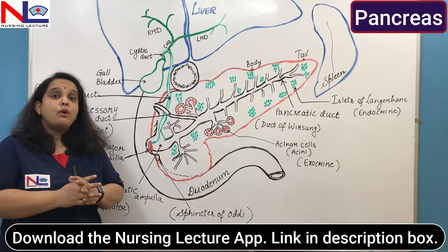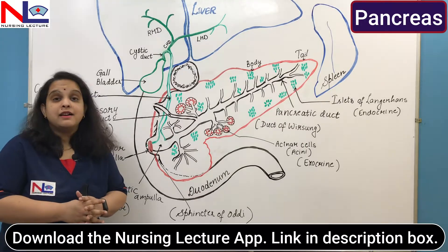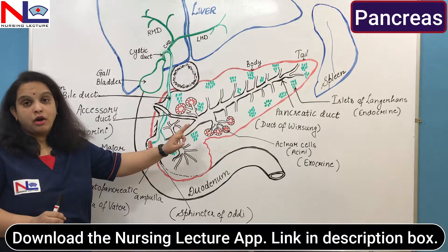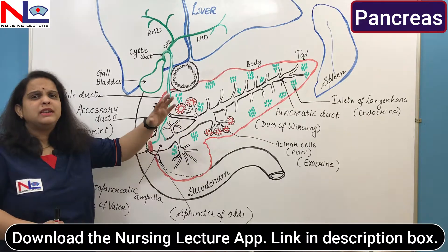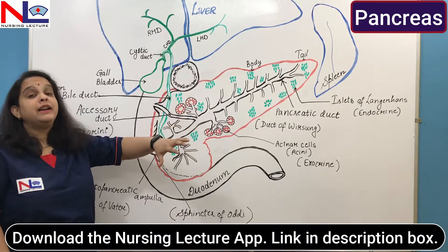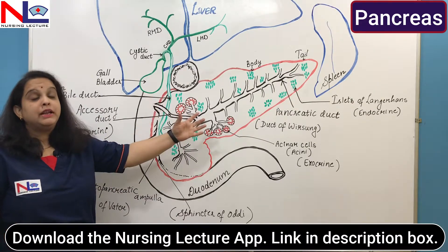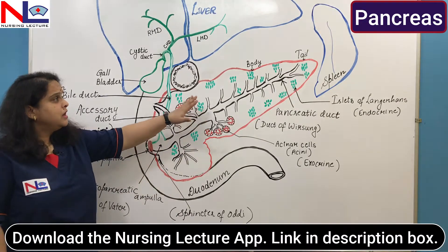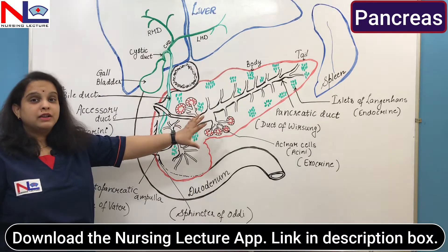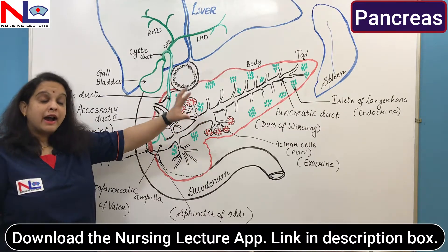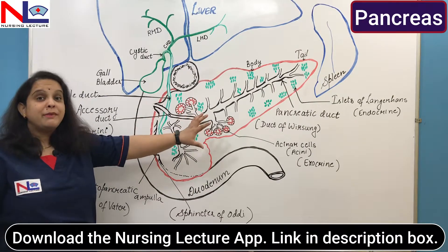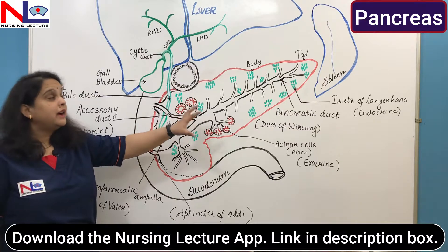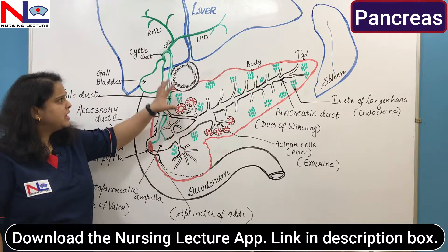The pancreas is a retroperitoneal organ because it lies behind the peritoneum — 'retro' means behind. So this is the retroperitoneal organ that lies behind the peritoneum as well as behind the stomach.